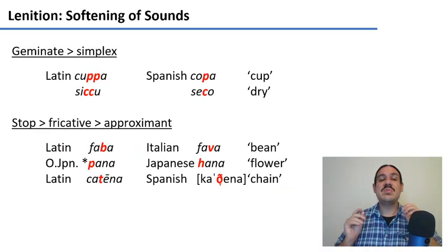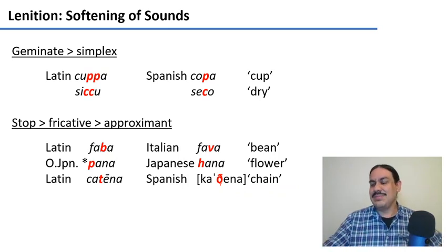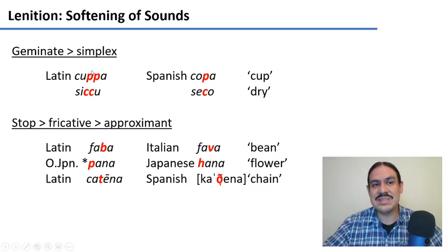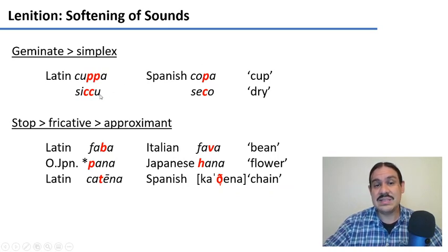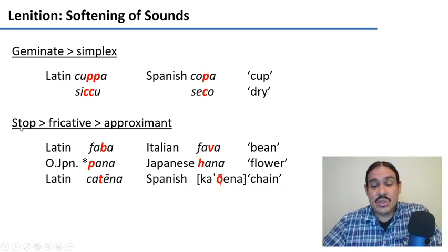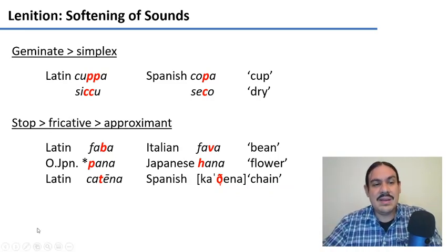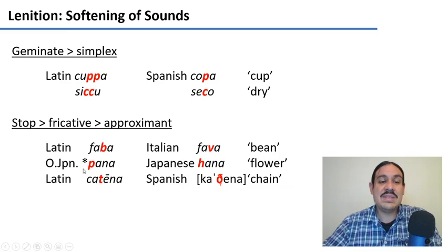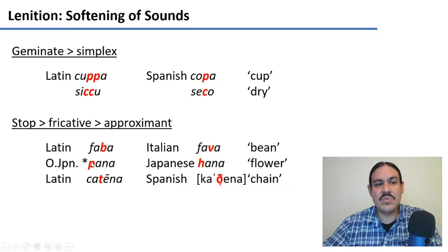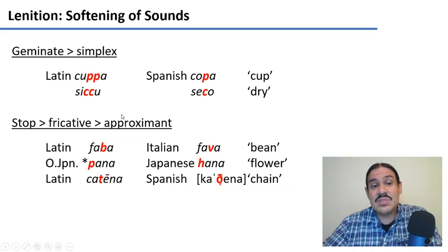Lenition is very interesting — sounds become softer. For example, if you have a geminate, which is two of the same sound, it becomes a simple version: Latin 'cuppa', 'sicca' going to Spanish 'copa', 'seco'. You can have lenition where you go from a stop to a fricative, because it becomes softer with increased airflow — like Latin 'faba' (bean) to Italian 'fava', or Old Japanese 'pana' to modern Japanese 'hana' (flower), going from a stop to a fricative. The change can go even further, from a stop to an approximant.